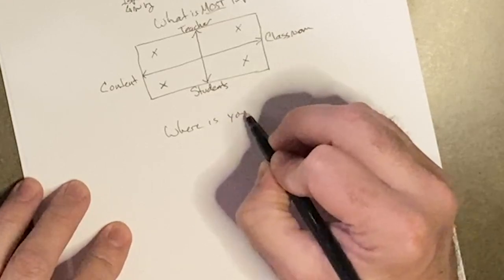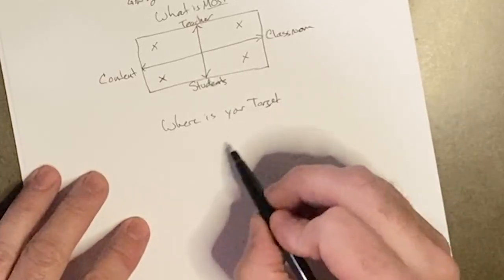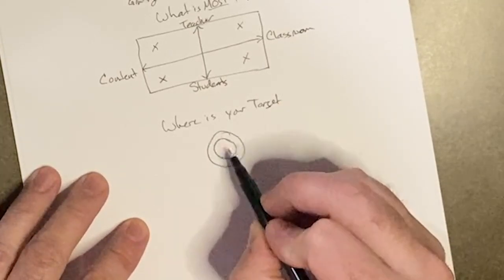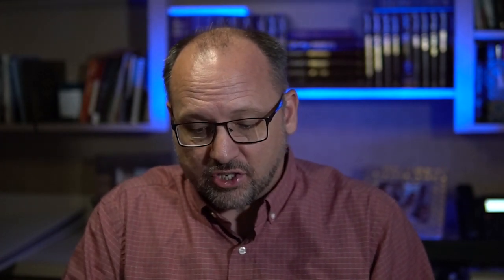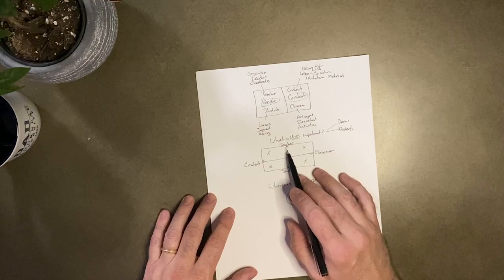There is no right or wrong answer. I want you to think of it this way: where is your target? This target is movable. If you pre-plan your lessons, you can think, 'This lesson works well for the classroom — working with the content, doing some things maybe with a handout, working together to get some answers.' But maybe there's a lesson that's really hard and takes a lot of background teaching — you're going to present the material, so that lesson might be more teacher-focused.